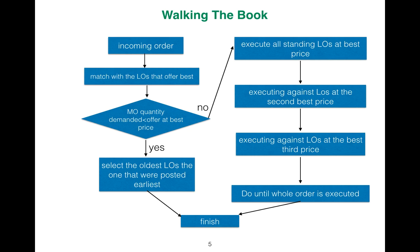This is a very simple algorithm for what we call walking the book. First, we have an incoming order. It matches the limit orders that offer the best price as much as it can. After that, if the market order quantity demanded is less than the offer at the best price, we select the oldest limit orders — the ones that were posted earliest. If not, we execute all standing limit orders at the best price, then execute against limit orders at the second best price, then the third best price. This continues until all orders are executed.